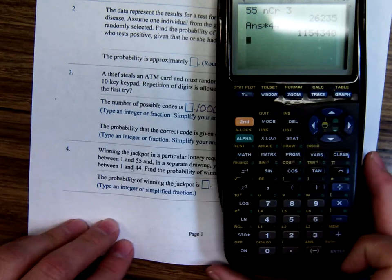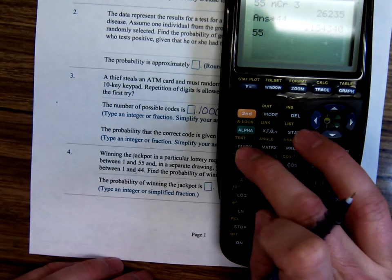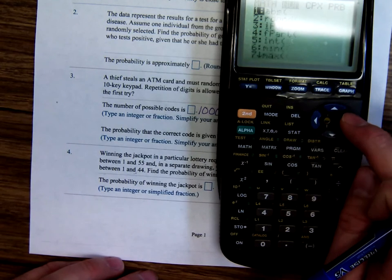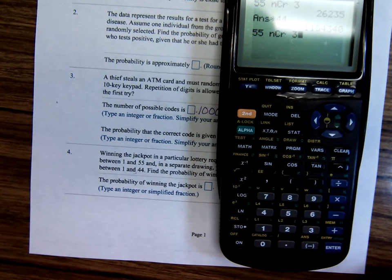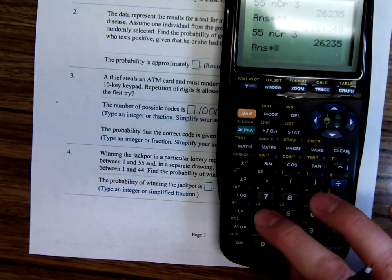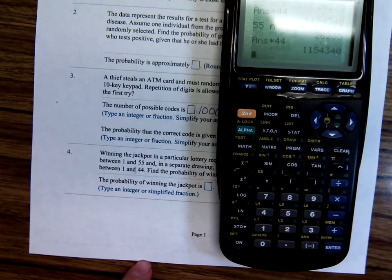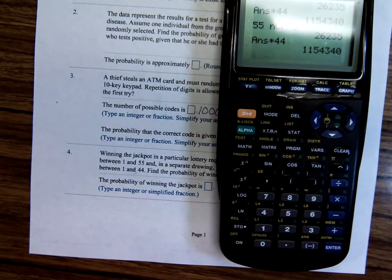Oh, well, right there. Okay. You see, I went 55, math, probability, NCR 3, and then times 44. And that's how many possible outcomes there are. So 1 over that.